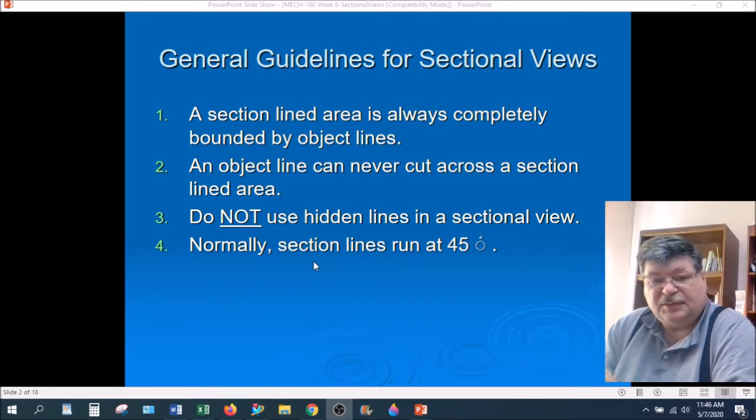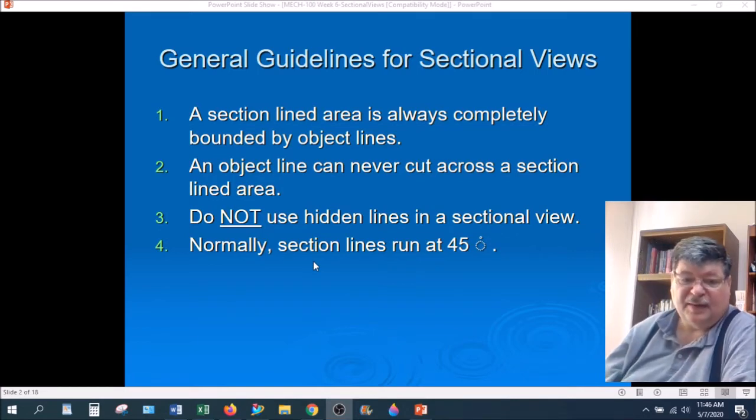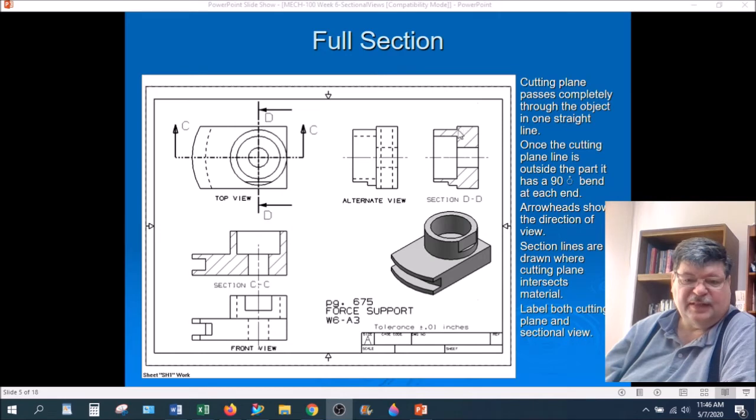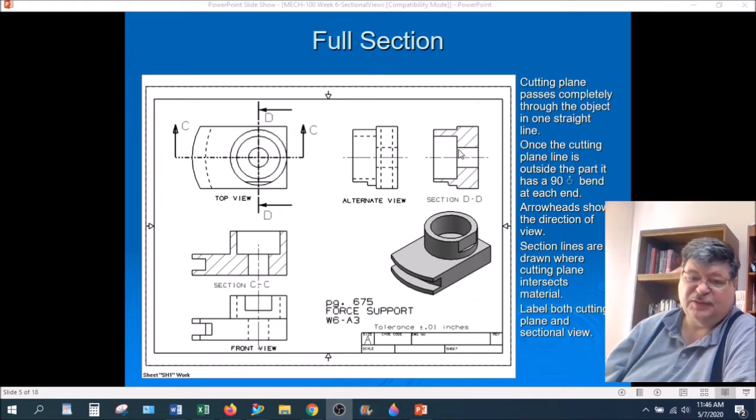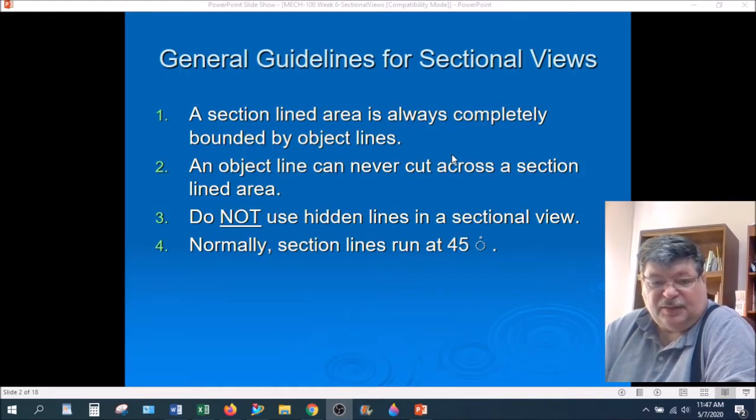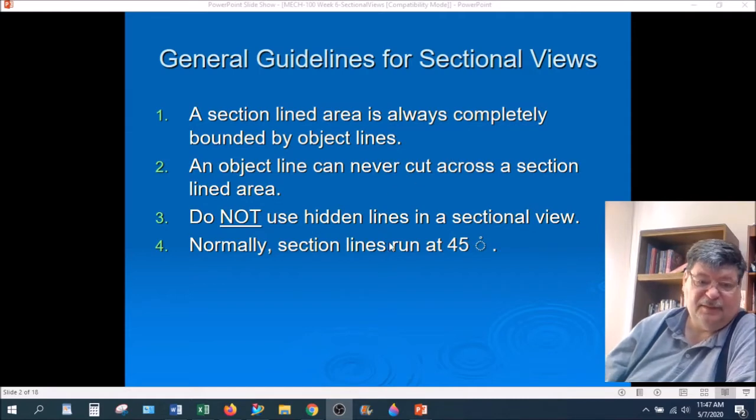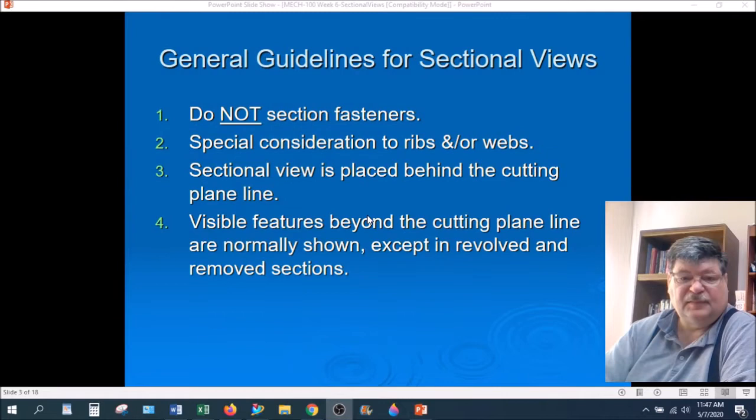Some general guidelines for sectional views. The sectioned lined area is always completely bounded by object lines. An object line can never cut across a sectioned lined area. So this is, they say an object line completely bounds or is a boundary for a sectioned lined area. Or another way to say it is you can't have an object line cutting through the sectioned lined area. We do not use hidden lines in a sectional view. By default, NX has the hidden lines either turned on or off and I have them turned on in your template. So anytime you create a sectional view in NX, you will have to manually turn the hidden lines off in that view. Normally, sectioned lines run at 45 degrees.